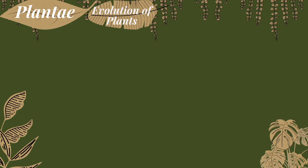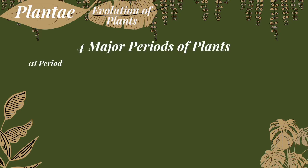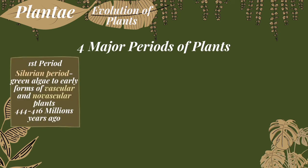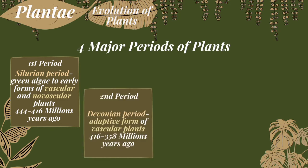Now, let me tell you a brief story of the evolution of plants. There are four major periods. The first is the Silurian period — the start of all plants — when vascular plants and non-vascular plants formed from green algae, which happened 444 to 416 million years ago. The second is the Devonian period, when vascular plants were able to adapt on land and the first forests on Earth formed, which happened 416 to 315 million years ago.